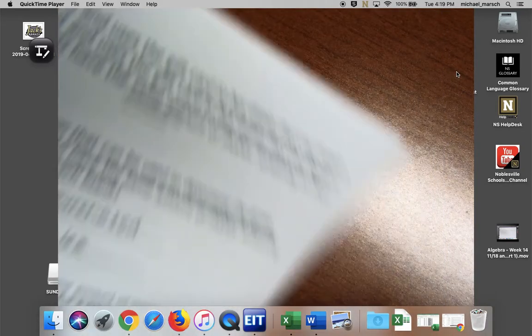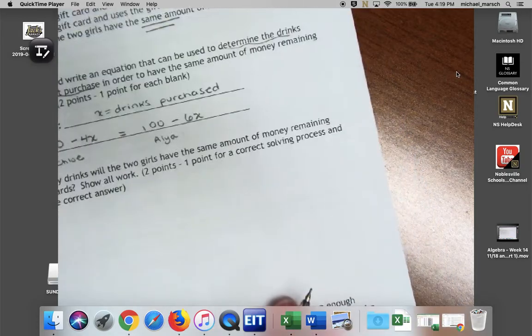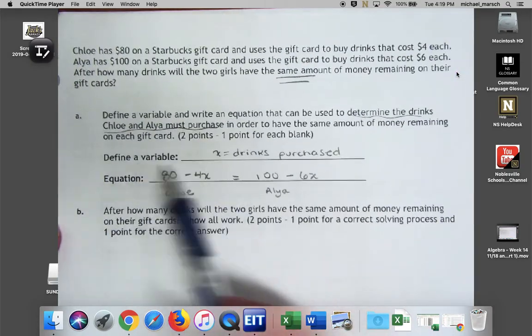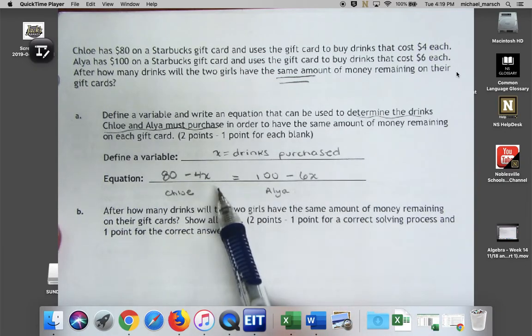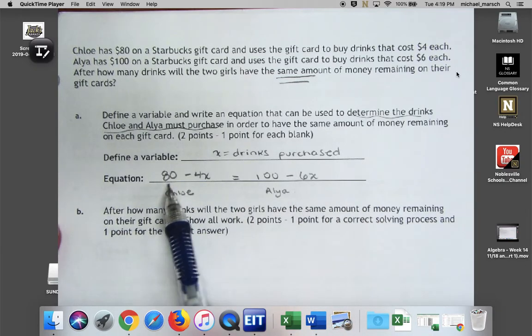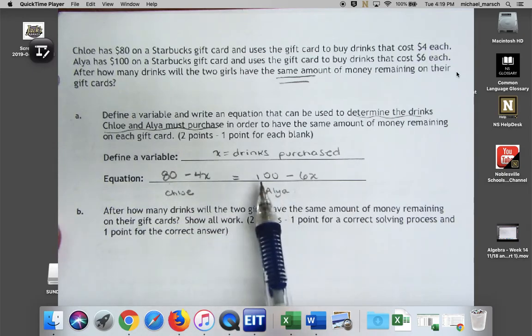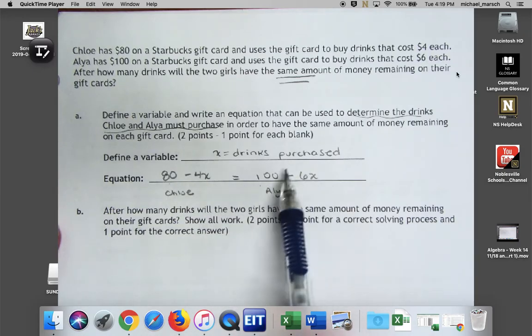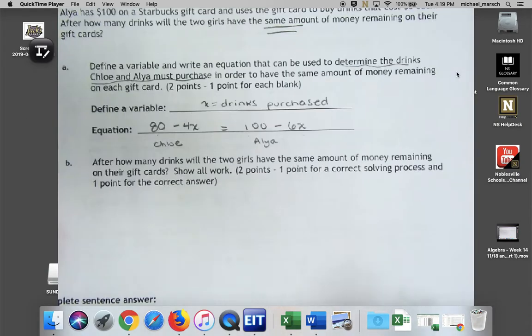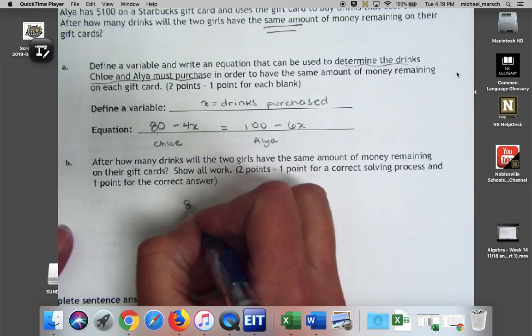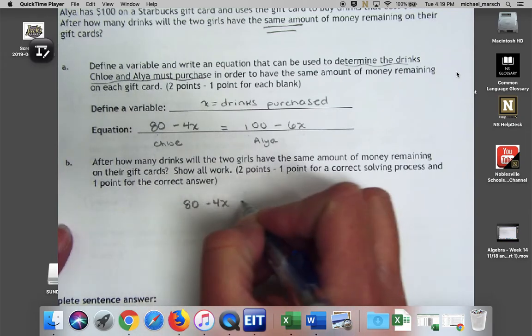Let's move on to question three now, which I'm pretty sure we started this out in all three classes, right? Our x is how many drinks they purchased. We know Chloe has $80 on her card minus $4 per drink, and Alia has $100 on her card minus $6 per drink. So after how many drinks will the two girls have the same amount of money? So we're just going to solve this: 80 - 4x = 100 - 6x.